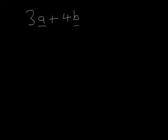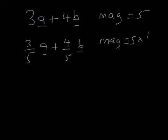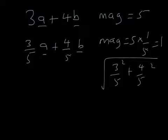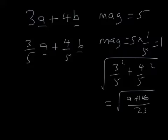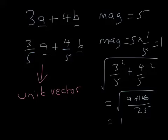Consider the vector 3a plus 4b, whose magnitude is 5. Now consider the vector (3/5)a plus (4/5)b. Its magnitude is 5 multiplied by one fifth, which equals 1. Let's verify: (3/5)² plus (4/5)² is 9/25 plus 16/25, which equals 25/25 = 1. So this vector has magnitude 1, and it has a special name — it's a unit vector. Any vector with magnitude 1 is a unit vector.